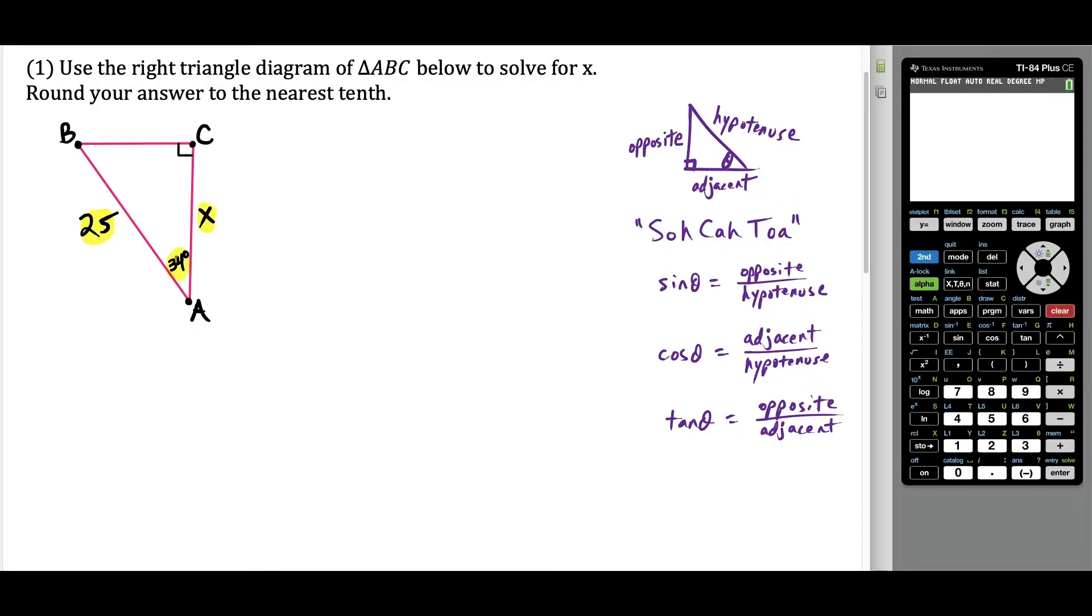But in this case, we know one side and one acute angle of this right triangle. So what I like to do for questions like this, we know this 34 degree angle, and the side here x is the one adjacent or next to the 34 degree angle. So I could just label this, but as you get good at these, you kind of just label this in your head.